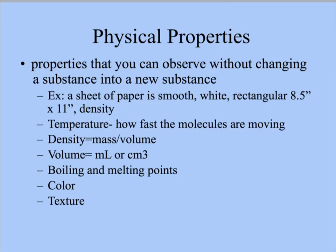A physical property is a property that you can observe without changing the substance into a new substance. In other words, you can't change the chemical formula. So some examples of physical properties would be temperature, volume, density, boiling points, color, texture.